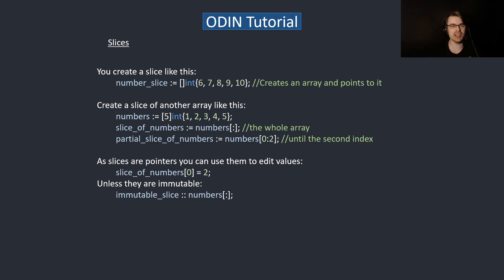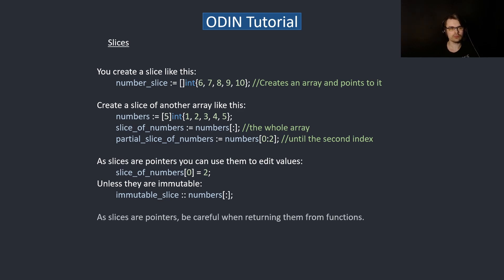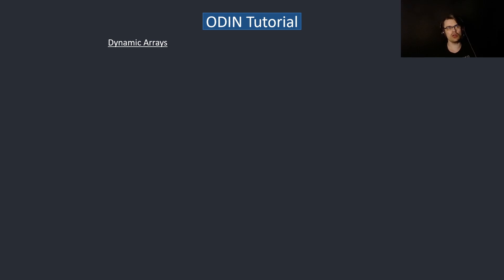Since slices are pointers, you can use them to edit values — they will edit the original array. So a slice of numbers will change the first element from one to two. If you use dot-dot syntax you can't change the values — that's the difference. For mutable slices use colon-equals; for immutable use colon-colon. Be careful when returning slices from functions — don't point to a stack variable because it will go out of scope.